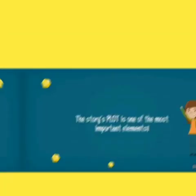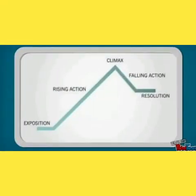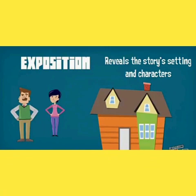The next element is plot. The story's plot is one of the most important elements. Plot is a series of events in the story — everything that happens in the story makes up its plot. Plot has different components: exposition, rising action, climax, falling action, and resolution. Exposition reveals the story's settings and characters; you can also call it the beginning of the story, where characters are introduced to us.